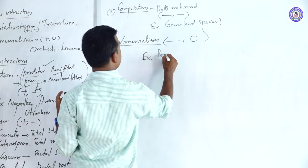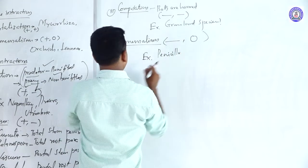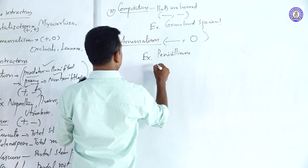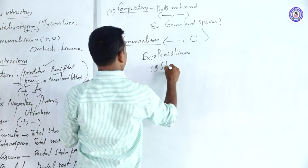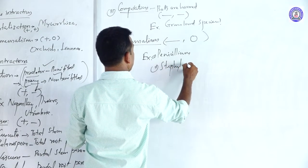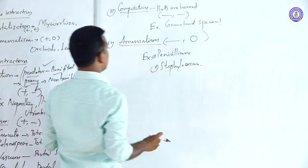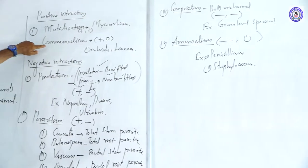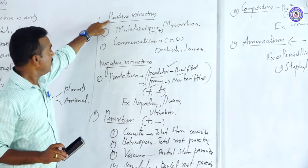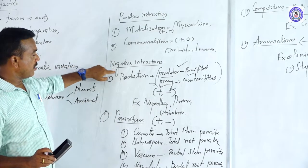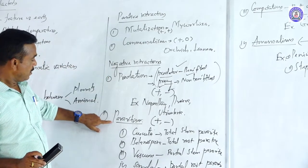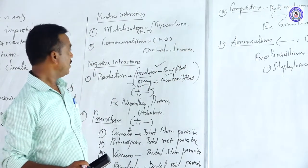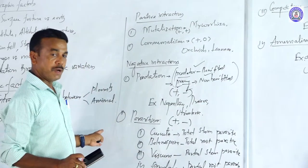An example of amensalism is Penicillium and Staphylococcus. So the types of interactions include mutualism and commensalism — from positive interaction — and predation, parasitism, competition, and amensalism — from negative interaction. These are the things that come under biotic factors.